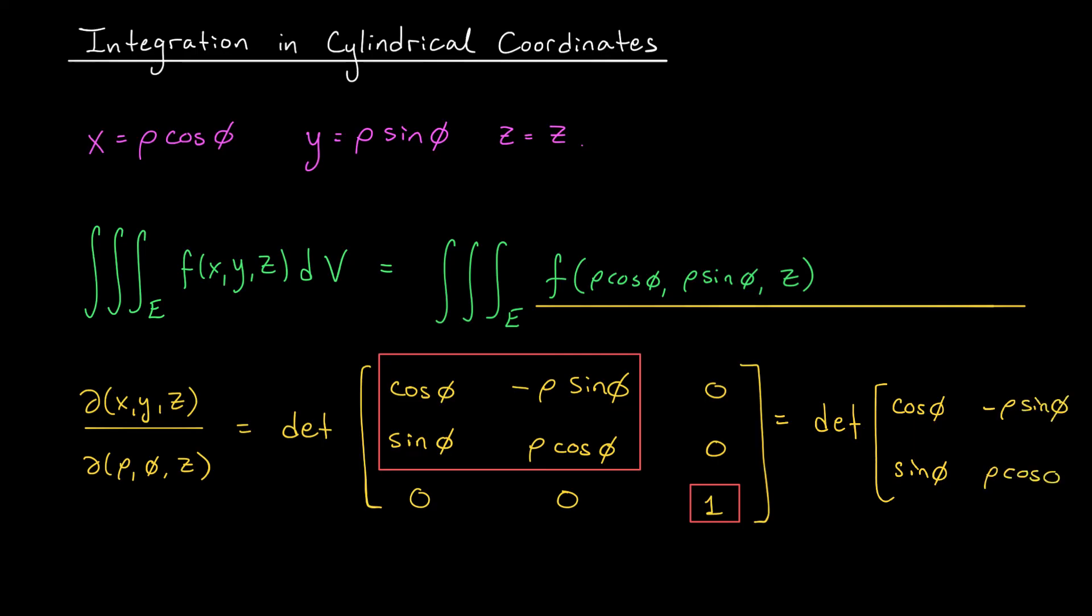We multiply the cross terms and take the difference to get rho cos² phi + rho sin² phi. Of course, cos² phi + sin² phi will be one, giving us a final answer of rho.